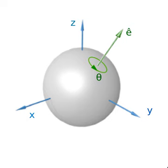Rotation in mathematics is a concept originating in geometry. Any rotation is a motion of a certain space that preserves at least one point. It can describe, for example, the motion of a rigid body around a fixed point.